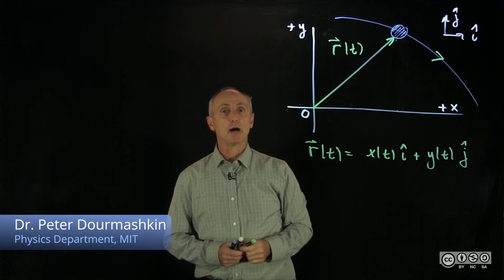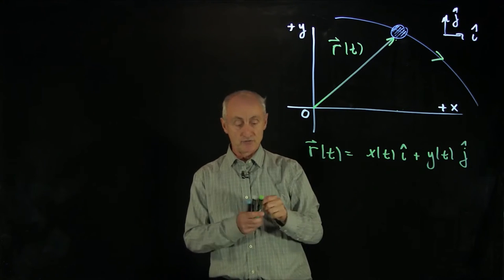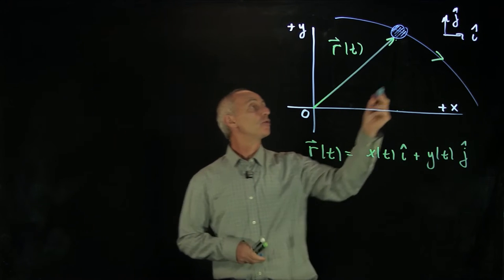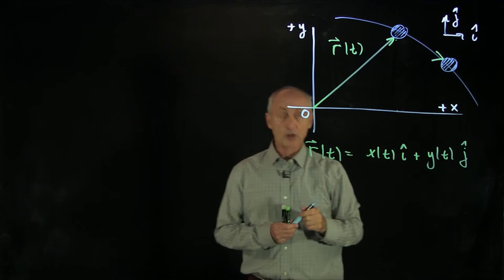Recall when we were examining the motion of an object in two dimensions, we introduced a Cartesian coordinate and a position vector. Now let's suppose the object has moved to a new point along the orbit.